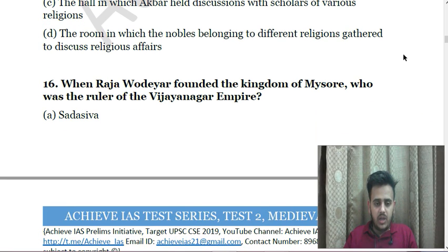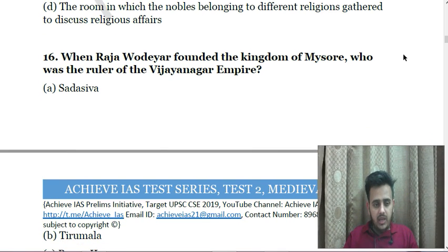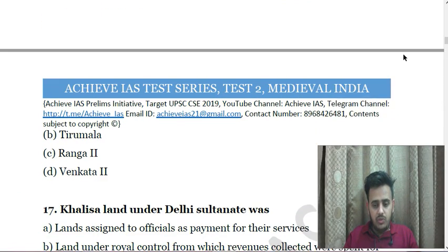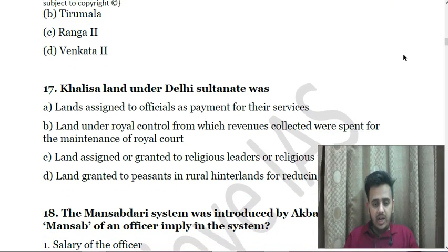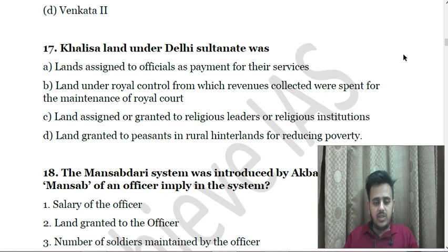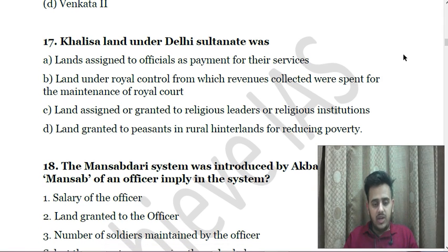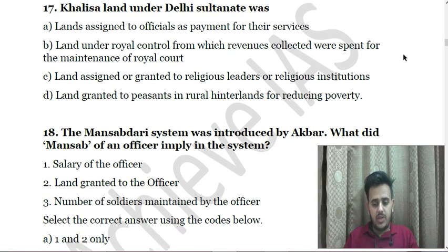Next: When Raja Wadiyar founded the kingdom of Mysore, who was the ruler of the Vijayanagara empire? A. Sada Siva, B. Tirumala, C. Ranga II, D. Venkata II. Next: Khalisa land under the Delhi Sultanate was — A. Land assigned to officials as payment for their services, B. Land under royal control from which revenues were spent for maintenance of the royal court, C. Land assigned or granted to religious leaders or institutions, D. Land granted to peasants in rural hinterlands for reducing poverty.